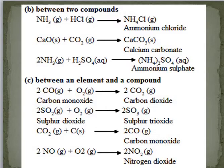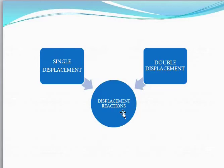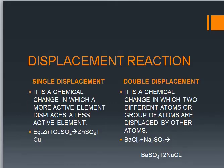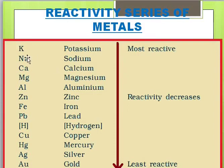Now we look at displacement reactions. There are two types: single displacement and double displacement. Single displacement is a chemical change in which a more active element displaces a less active element. To understand this, let's look at the reactivity series of metals: potassium, sodium, calcium, magnesium, aluminium, zinc, iron, lead, hydrogen, copper, mercury, silver, gold, and platinum.